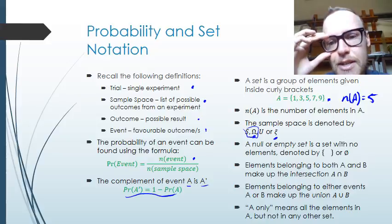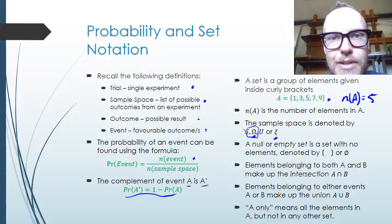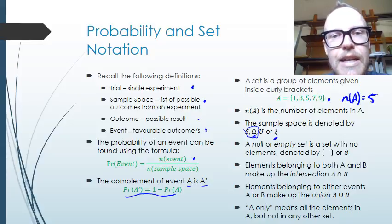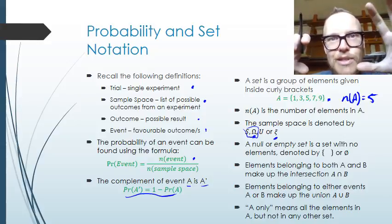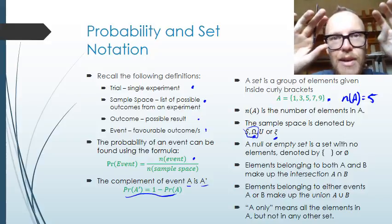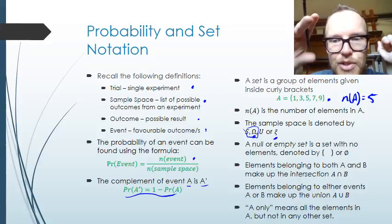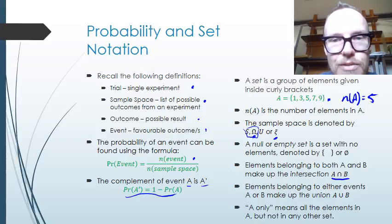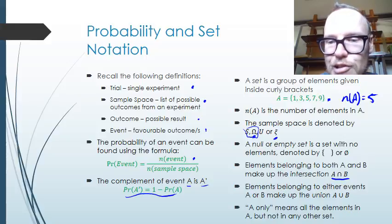A null set, or the empty set, is a set with no elements. It's possible to have a set that doesn't have anything in it, and it's denoted by a set of empty curly brackets or a zero with a line through it. If elements belong to two different sets — so they belong to A and they belong to B — then that's what we call the intersection of those two sets. We call it A intersection B, and we give it the symbol of an upside-down U, a kind of cap.